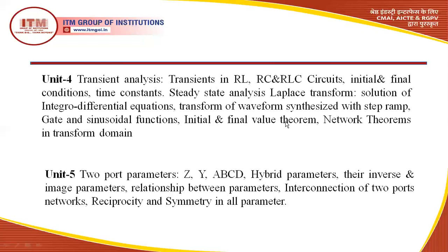Next, we talk about the initial and final value theorems. At the end, in unit five, we talk about two-port parameters. These parameters are again a representation of a circuit — we have a complicated circuitry, but we analyze it as a simple box. In that simple box, we have two ports: one is the input port and another is the output port. We can easily solve any kind of parameters with the help of that simplified representation of the circuitry. This is all about the syllabus we are going to study in this total series of network analysis.